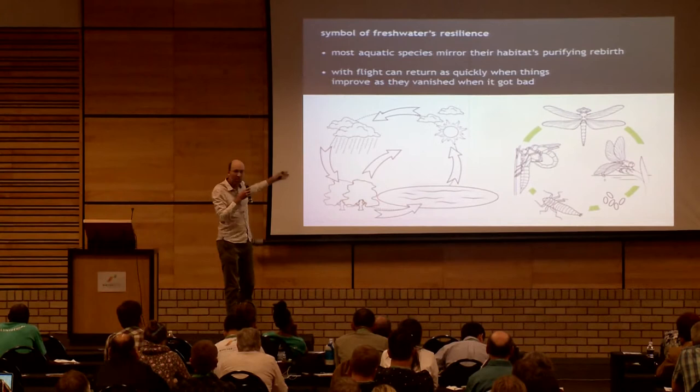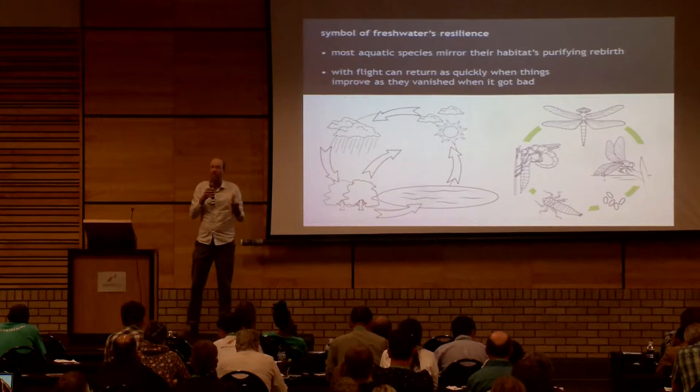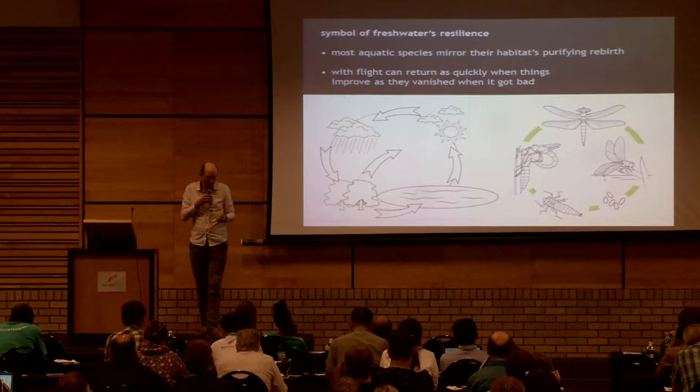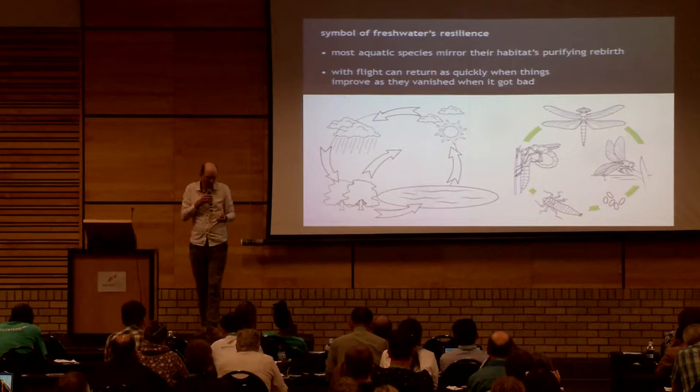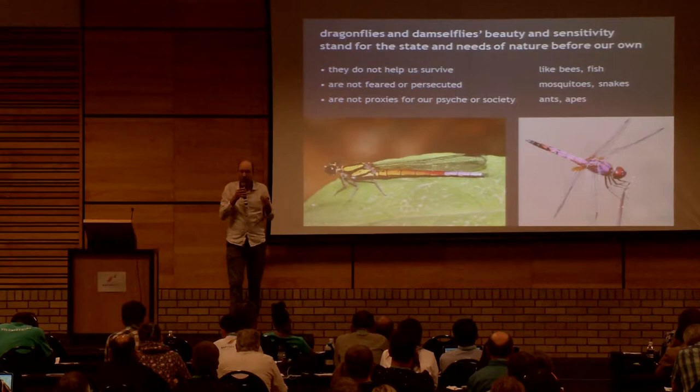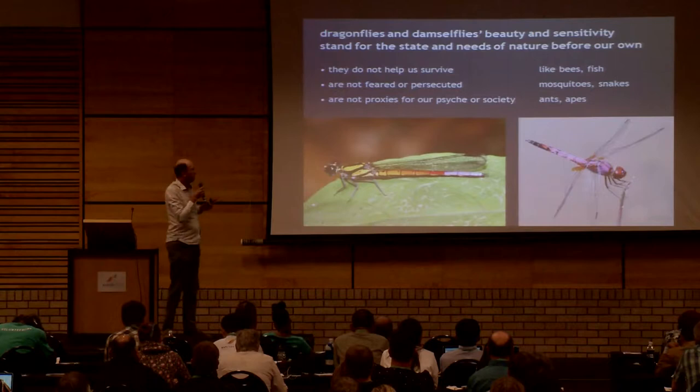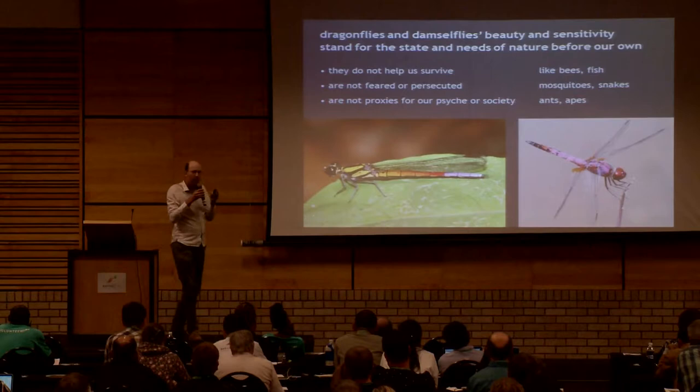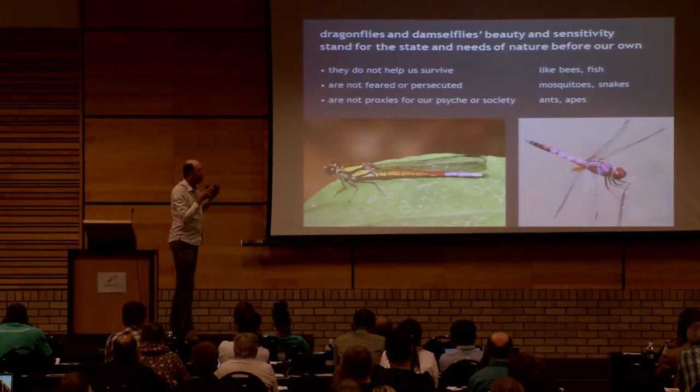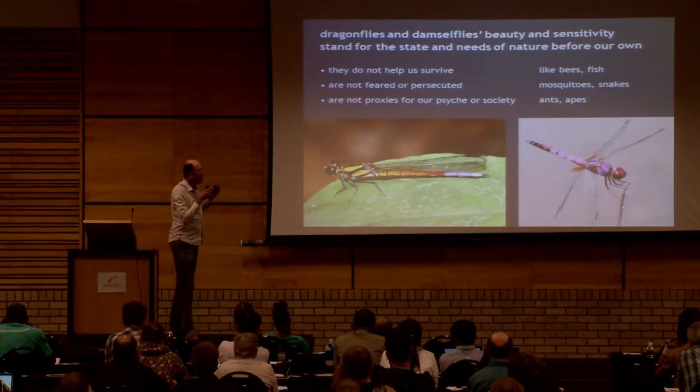We want freshwater to do everything at once — water our fields, use it as a sewer, drink from it, dam it for energy. It just doesn't work that way. So it's nice to have a model group that expresses that same kind of resilience, that has the same active cycle, that appears out of the water for us to see easily, that can fly and respond to change actively. That group is the dragonflies. What I personally like about them is that they're first about nature and second about humans — they're not a group we eat, fear, or study to understand ourselves. They stand purely for the beauty and the needs of nature.